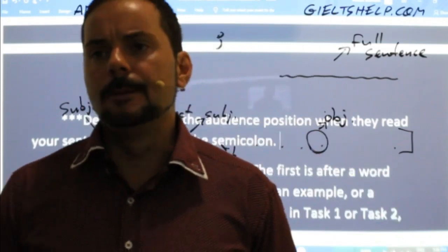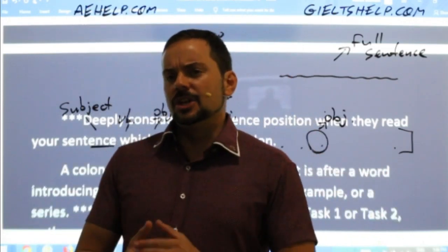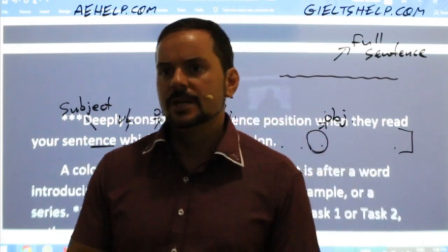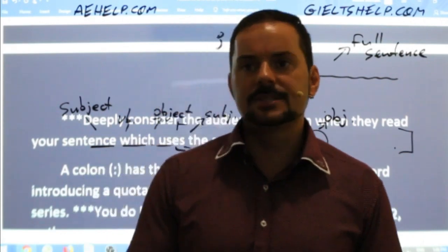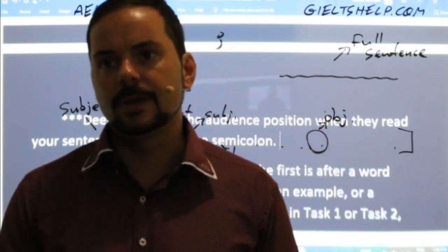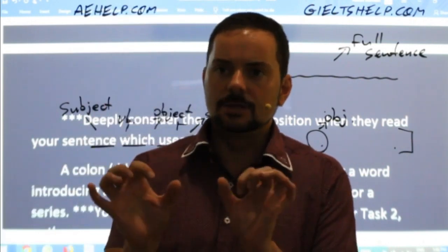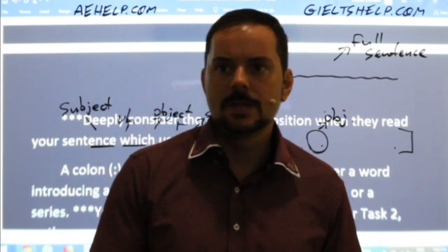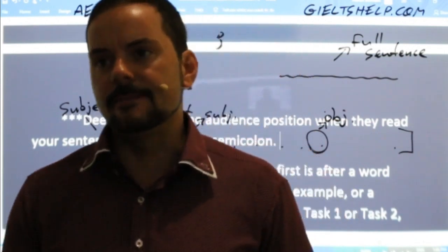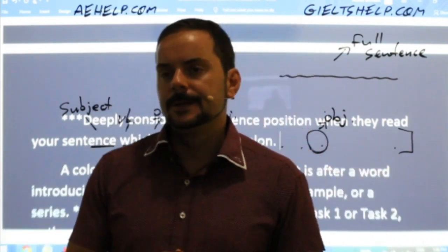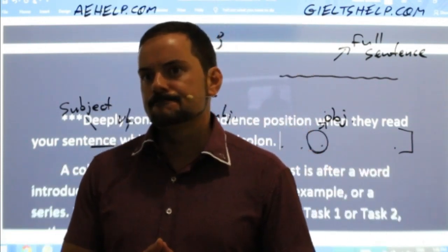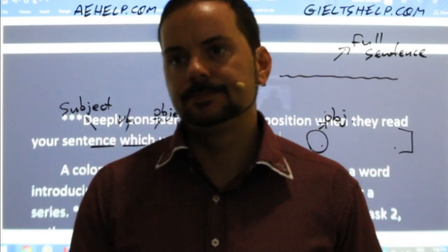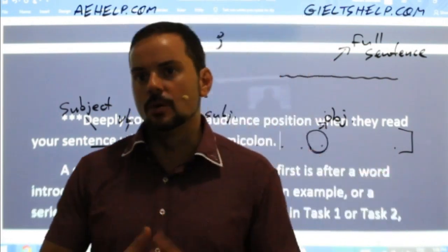A better sentence for Amarjeet would be: 'IELTS is mandatory; I must take it for immigration.' Or even: 'IELTS is mandatory; governments demand English skills.' Those make the connection much clearer for the reader. When you use the semicolon, always deeply consider the audience's position when they read your sentence.